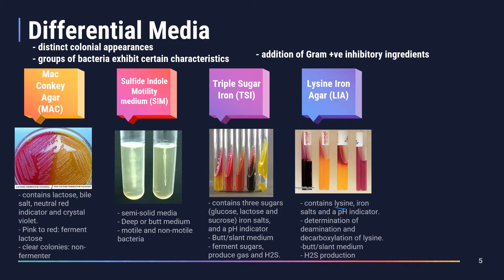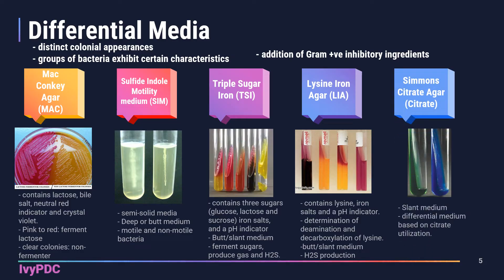Another medium is lysine iron agar (LIA), which contains lysine, iron salts, and a pH indicator. LIA is primarily used to differentiate bacteria on their ability to decarboxylate lysine in the butt portion and deaminate lysine in the slant portion, and is also useful for detecting hydrogen sulfide production. The original color of LIA is purple, while TSI is orange. Lastly, Simmons citrate agar is a differential medium based on the organism's ability to utilize citrate as its sole carbon source; original color is green and a positive reaction turns it blue.